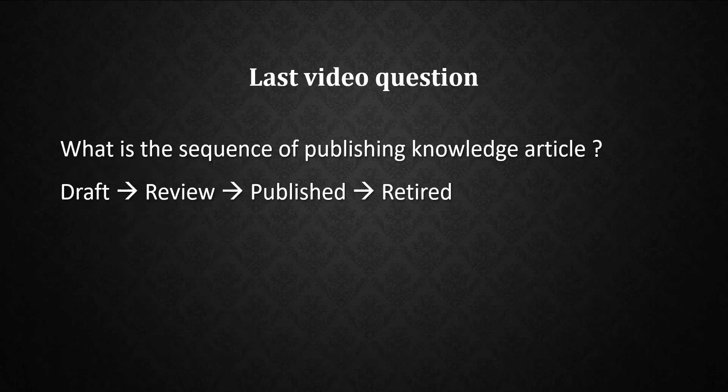From the last video, the question was: what is the sequence of publishing a knowledge article? The sequence is: first it goes to the Draft stage when initially created, then to Review where approvers need to approve it. Once approved, it moves to the Published state. Every published article has a retirement date, and once that date arrives, the article becomes Retired. The complete sequence is: Draft → Review → Published → Retired.